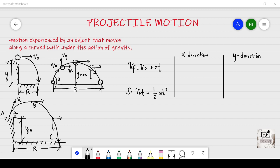A brief definition about this motion is that this is the motion experienced by an object that moves along a curved path under the action of gravity. As you can see, there are three drawings because there are three types of projectile motion.